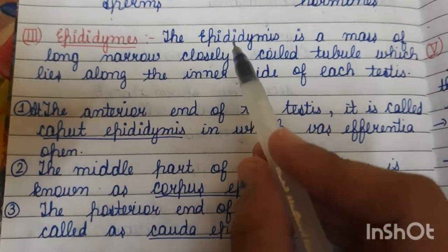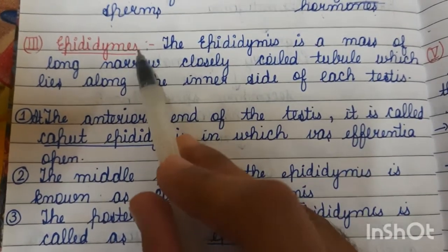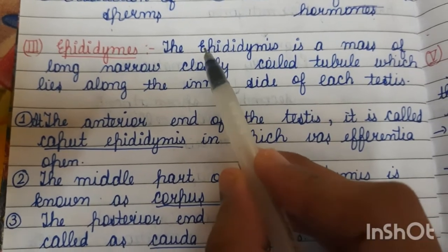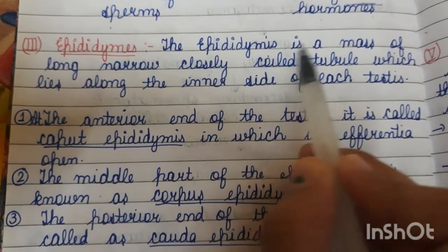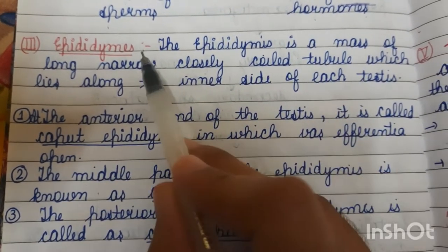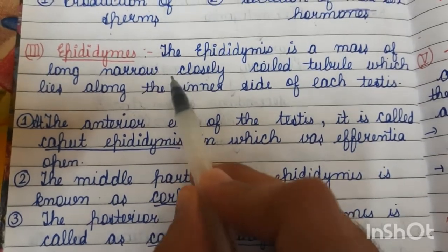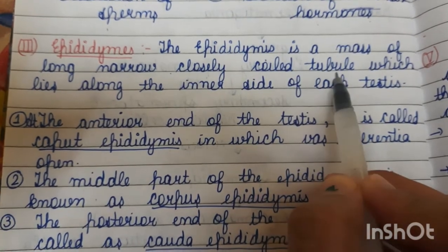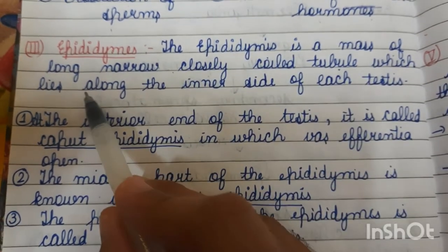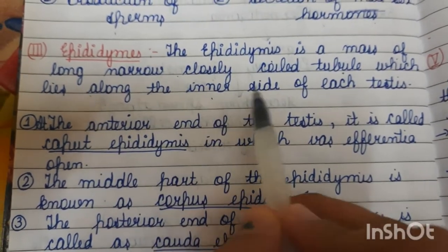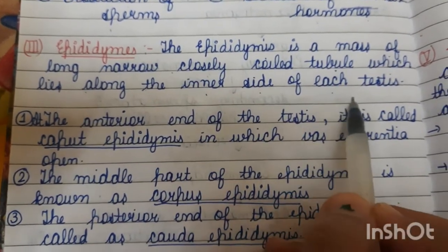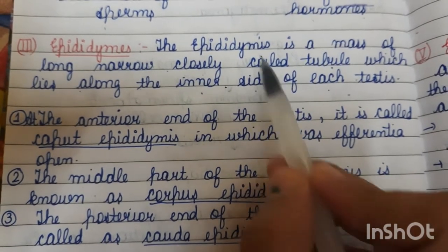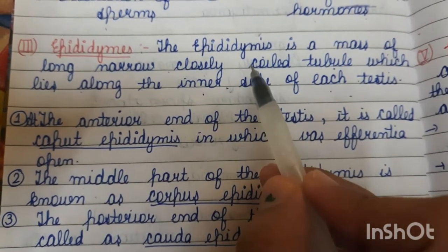What is the epididymis? The epididymis is a mass of long, narrow, closely coiled tubules which lies along the inner side of each testis. The inner side of the testis has this coiled structure which we call the epididymis.